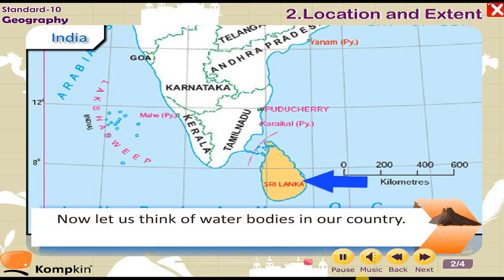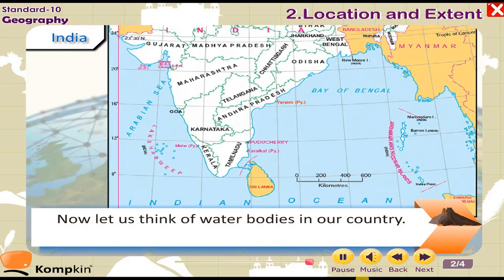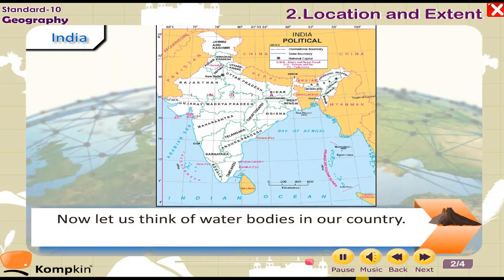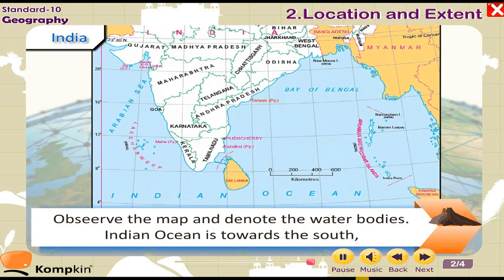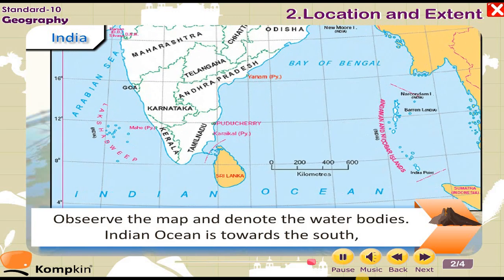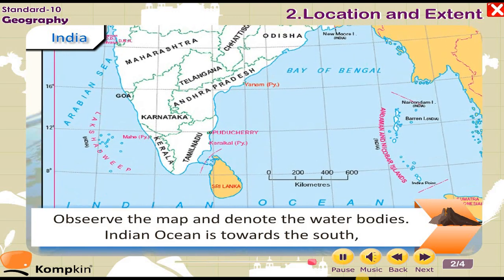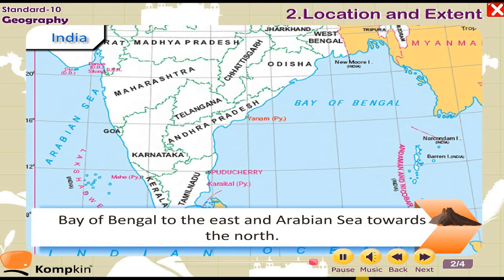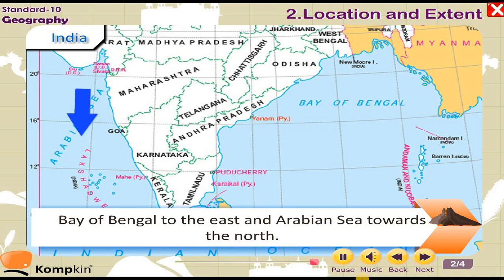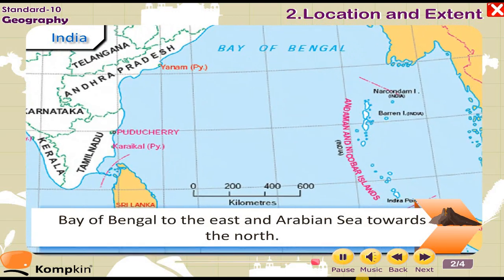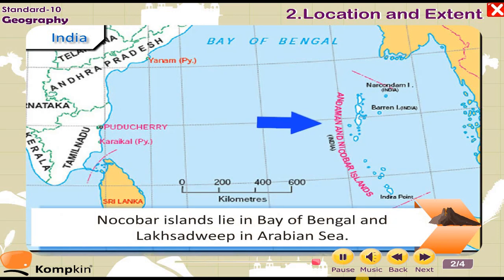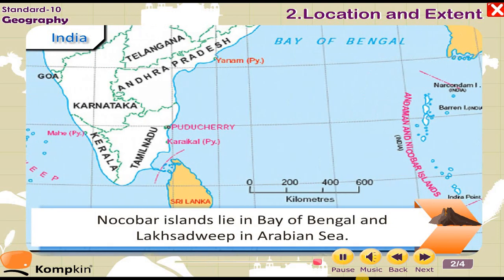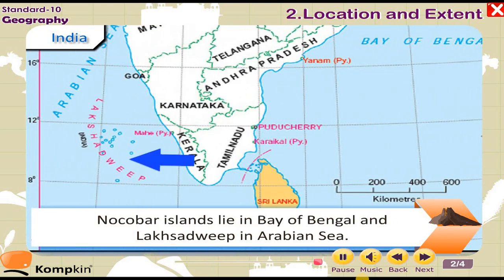Now let us look at the water bodies around India. Observe the map and identify them. The Indian Ocean is towards the south, the Bay of Bengal is to the east, and the Arabian Sea is towards the west. The Andaman and Nicobar Islands lie in the Bay of Bengal, and the Lakshadweep Islands lie in the Arabian Sea.